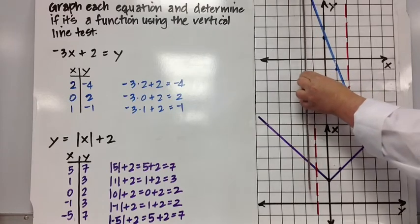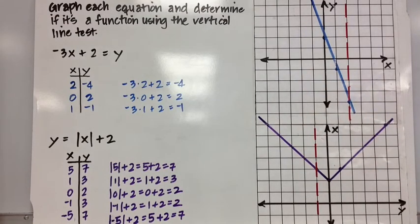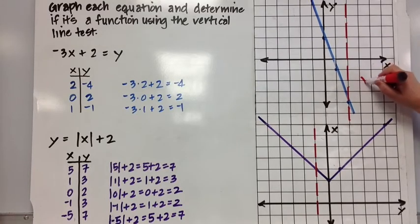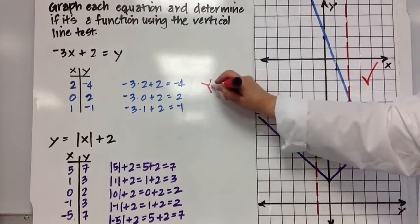But if I take my ruler and go all across that graph, I'll never cross that graph more than once. So we would say yes, it passes the vertical line test. So yes, this is a function.